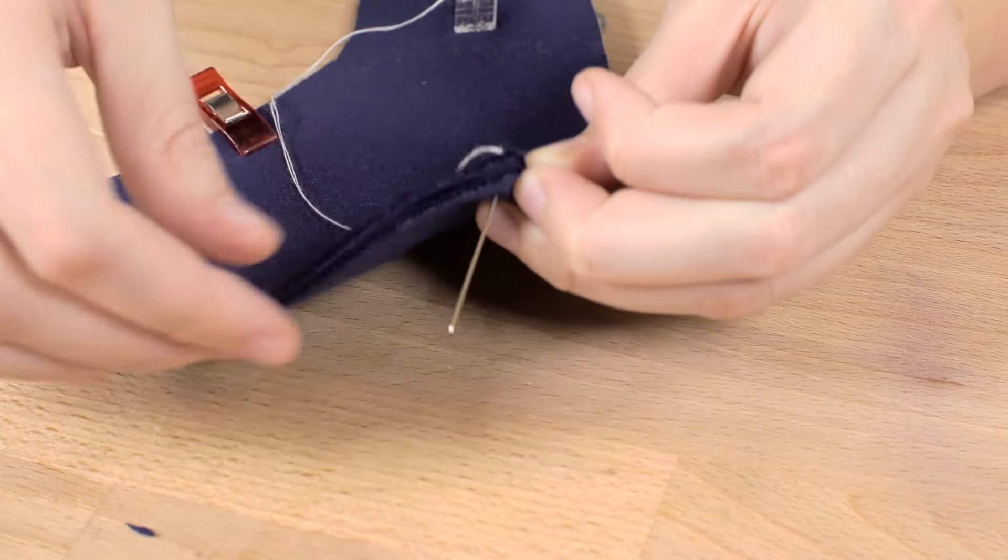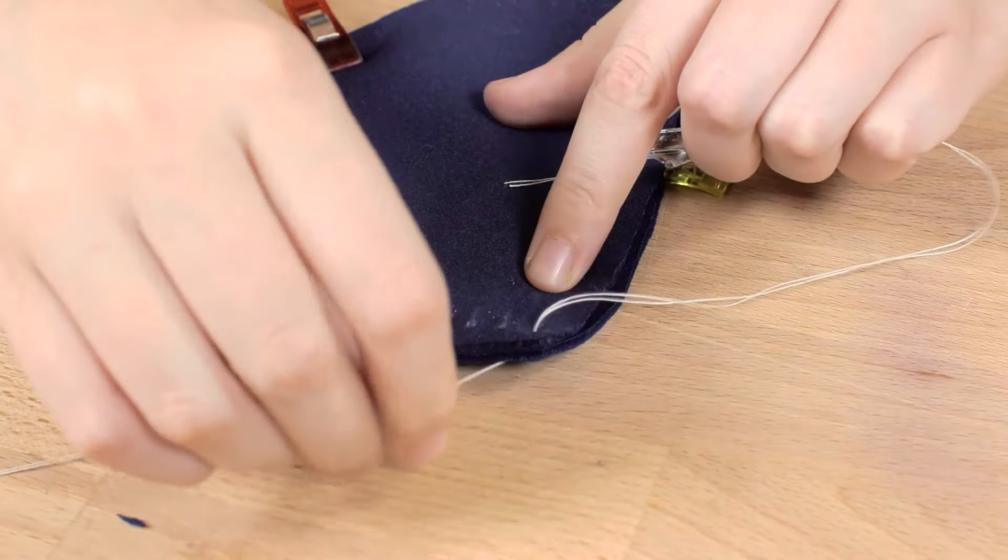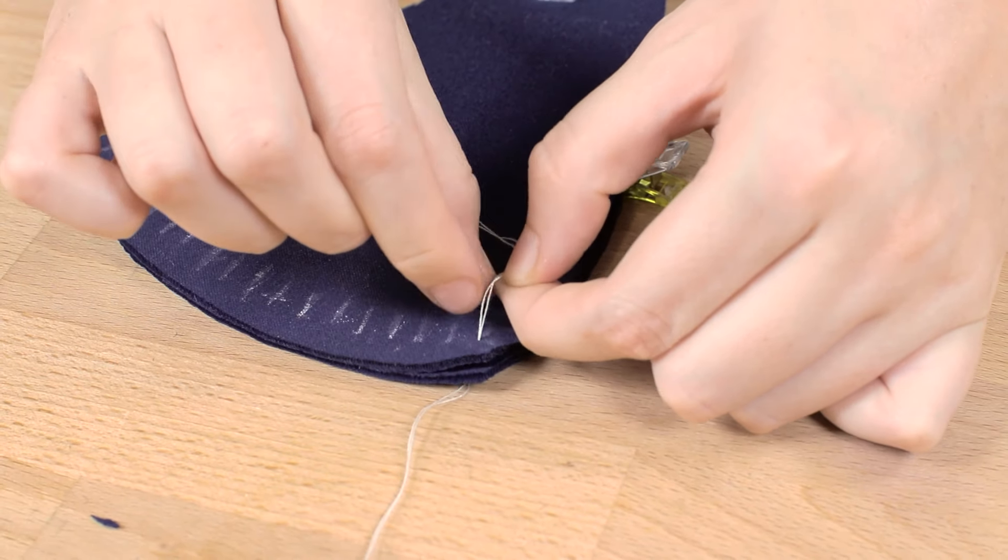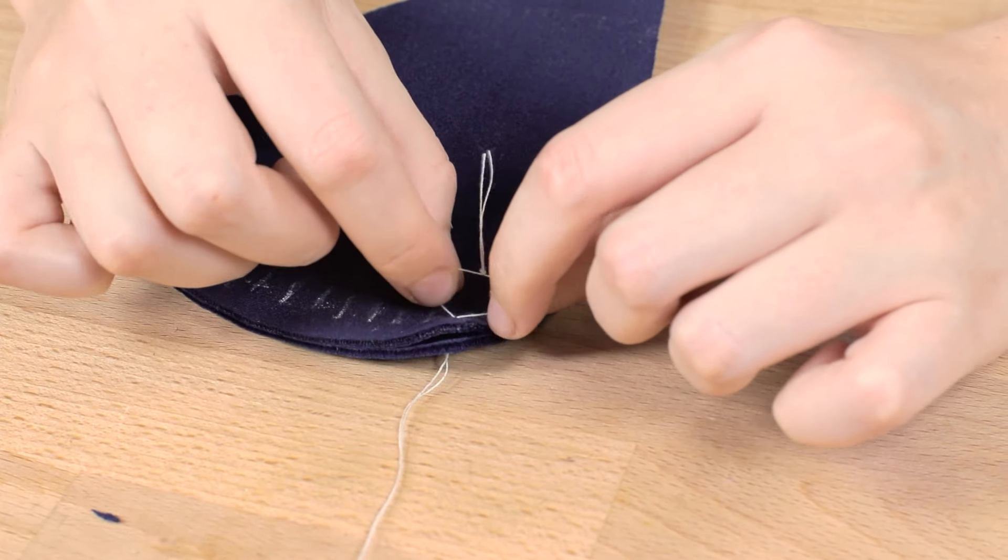Start by sinking the needle in at the first mark and through to the other piece of fabric. Do not pull the thread tightly through, though, because you're going to want to bring the needle back up through the loop where you had just tied the thread.